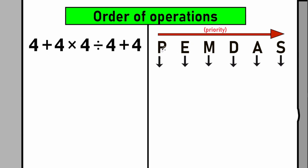PEMDAS is not an English word — it's a checklist where each letter stands for something. I'm going to explain it in strict order from left to right, because on the left side we have higher priority, and on the right side we have lower priority. Let's start with the letter P, which stands for parentheses. Each letter will be scanned in the perspective of this question.